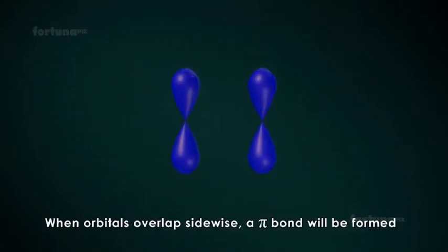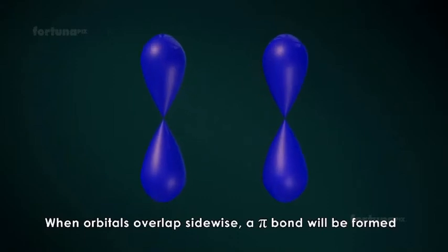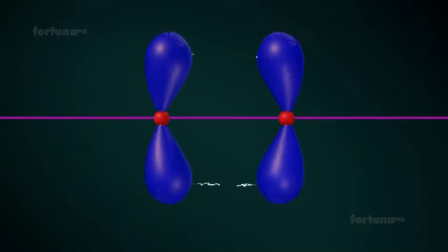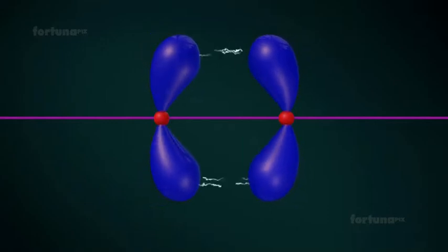When orbitals overlap sidewise, a pi bond will be formed. In a pi bond, electron density will be both above and below the inter-nuclear axis of the atoms. Because the attraction between the nucleus and the electrons is not as strong, a pi bond will be weaker.